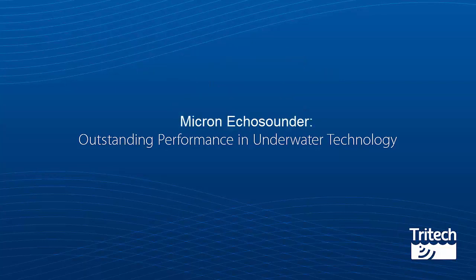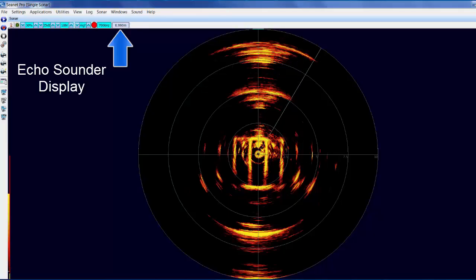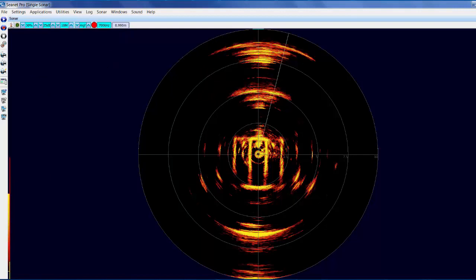Micron Echo Sounder. Operating on a 500kHz frequency, it has a maximum range of 50m and uses two different communications protocols, these being RS232 and RS485. There is also an additional analog output that should be scaled between 5 and 10 volts. These options are selectable via software interface.